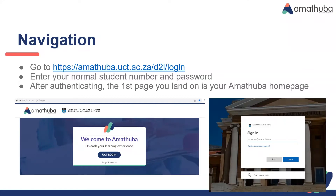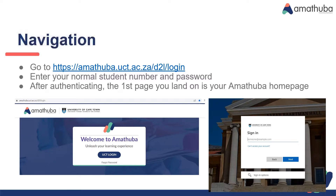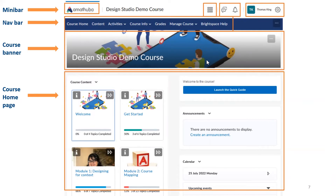To get to our site, we would need to go to amatuwa.uct.ac.za. If you are prompted, you can authenticate using the Authenticator app, and you end up on the Amatuwa homepage. On your mini bar at the top, you have your My Home, which is the Amatuwa logo, and that takes you back to the general UCT homepage from any page you're on.